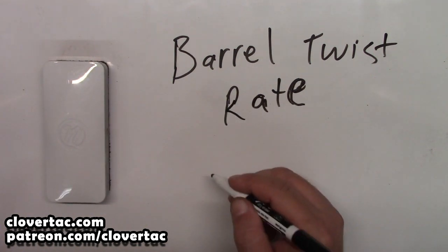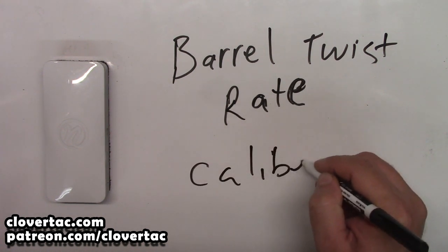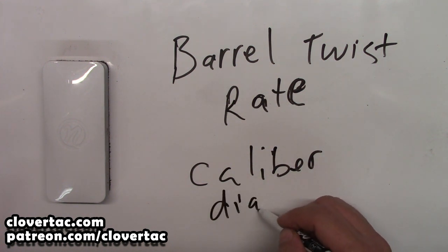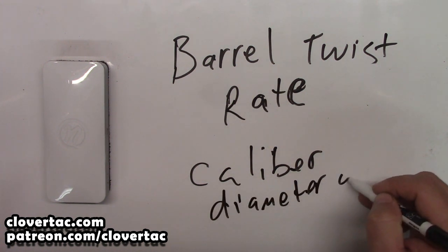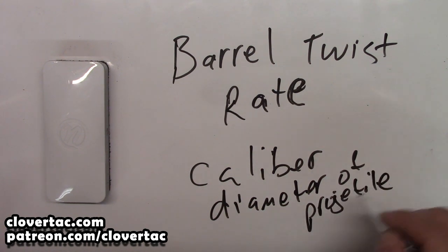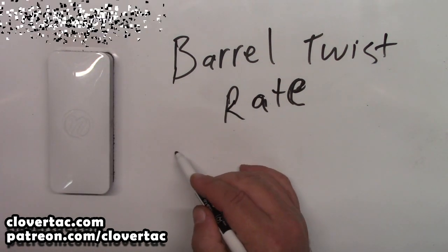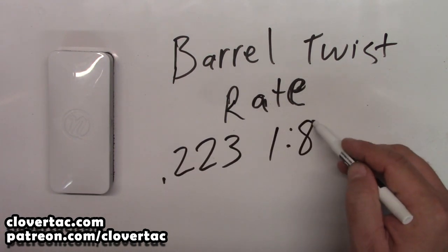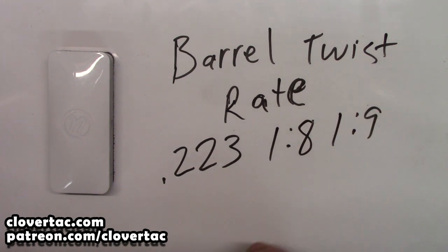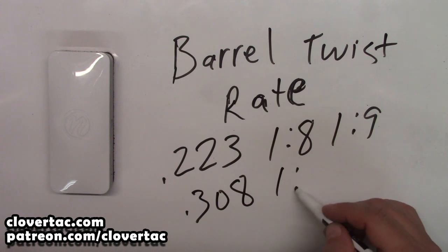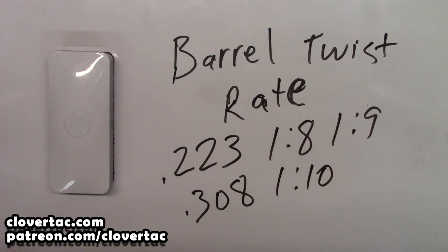Now when you're dealing with barrel twist rate, the caliber also comes into play. And that caliber is basically the diameter of your projectile. So when you're dealing with something like a 223 caliber, you see a lot of one-in-eight, one-in-nine twist. Whereas with a 308 caliber, a one-in-ten twist is really common.